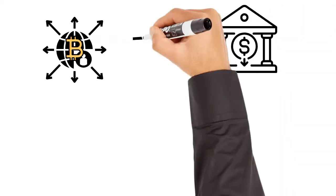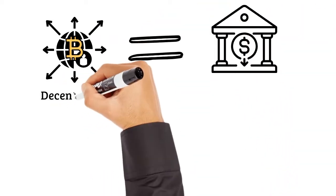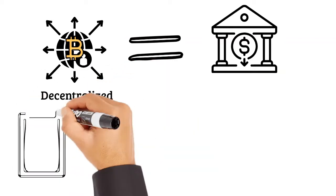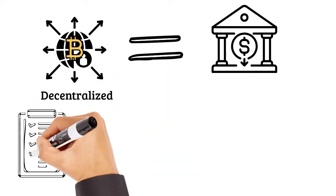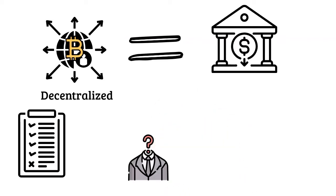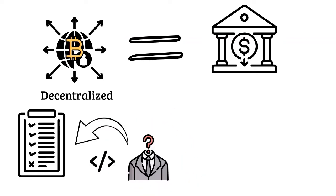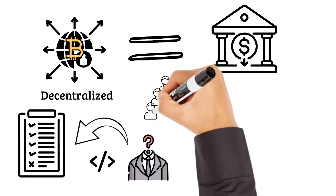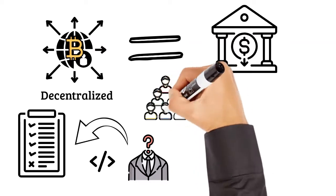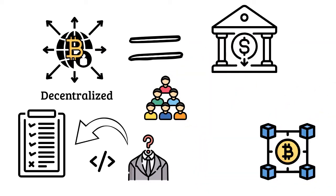But how do you create a system that has a decentralized ledger? How do you give someone the ability to update the ledger without giving them so much power that they will be corrupt or negligent in their work? Well, the rules of the bitcoin system, known as the protocol, solve this in a very creative way. In short, anyone who wants to participate in updating the ledger of bitcoin transactions, known as the blockchain, can do so.